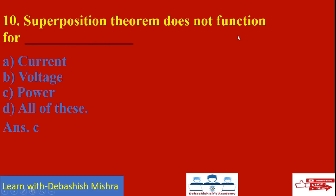Superposition theorem does not function for: current, voltage, power, or all of these? The answer is power, because power across an element is not equal to the sum of powers due to all other sources individually. The power in an element is the product of the total voltage and total current. So superposition theorem does not apply to power — remember this important point.